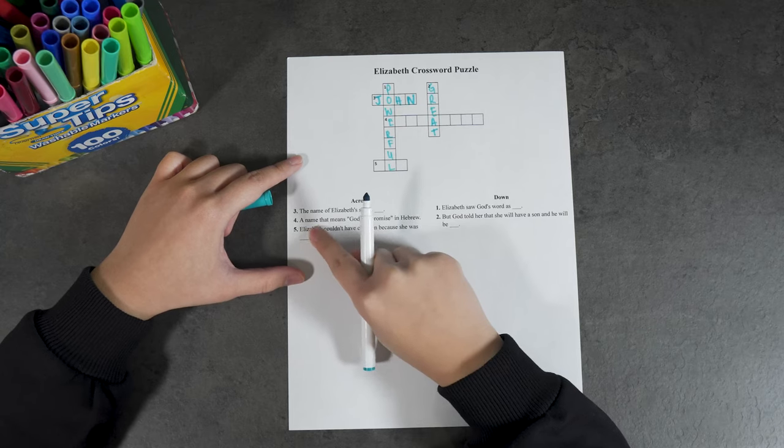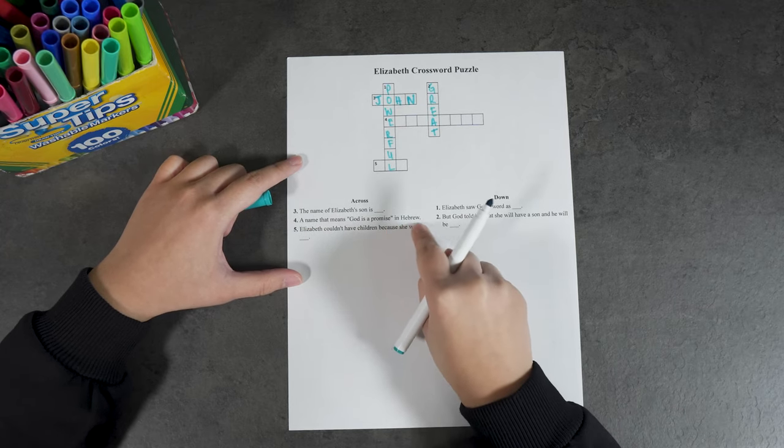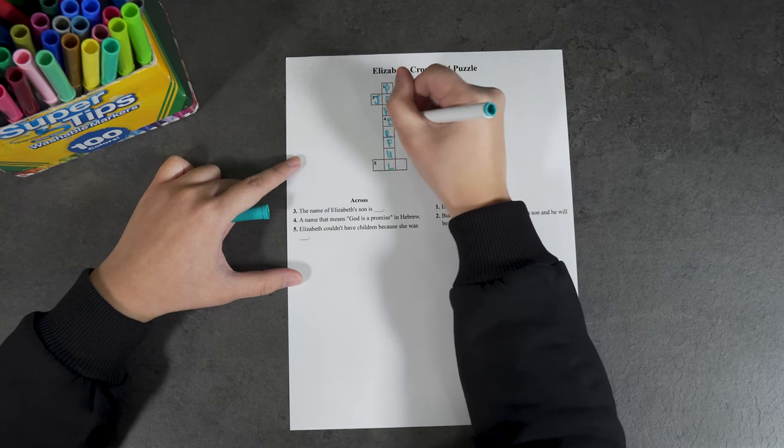Number four says, a name that means God is a promise in Hebrew is Elizabeth.